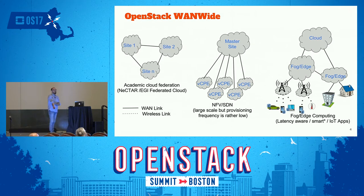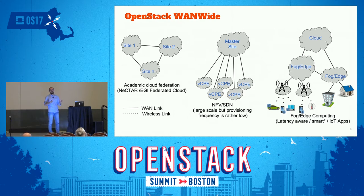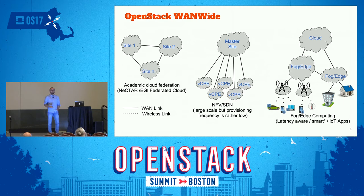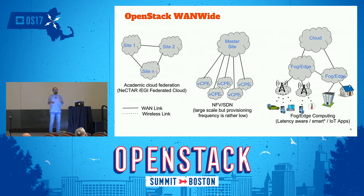So, why we need OpenStack wide-area deployment. Most of you heard about the keynote on Monday by Jonathan. We are currently moving toward a new paradigm called Fog and Edge computing. This paradigm can be viewed as a massively distributed cloud. We can have different kinds: the academic one, where you federate different cloud infrastructures to provide more resources; clouds targeting the vCPE use case for telcos; and new trends around Fog and Edge infrastructure related to IoT interconnection with data centers.